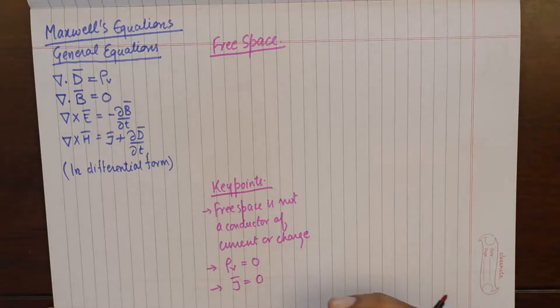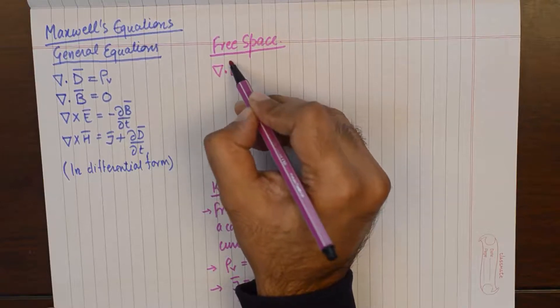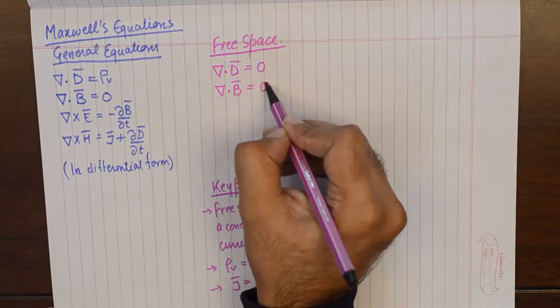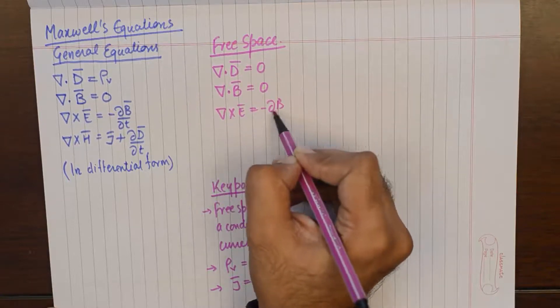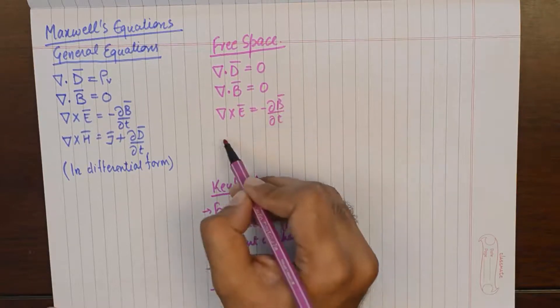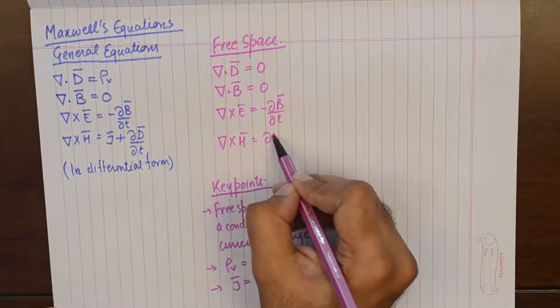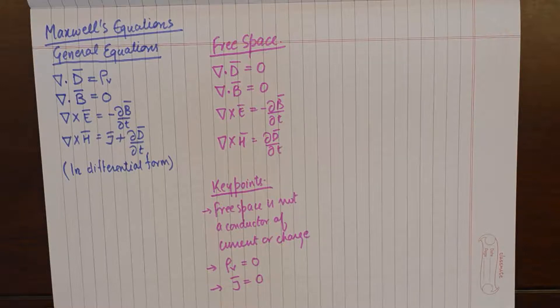If you understand this key point, you automatically deduce that there shall be no volume charge density and there shall be no current density in free space. Maxwell's equations change their form and we get a new set of equations for free space. You substitute J vector as zero and volume charge density as zero.